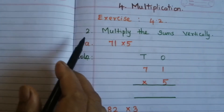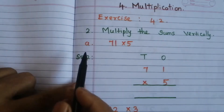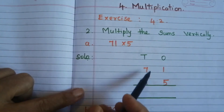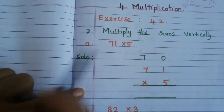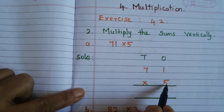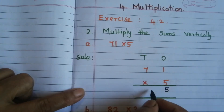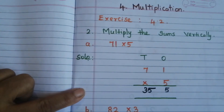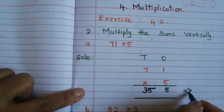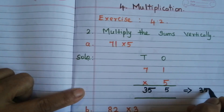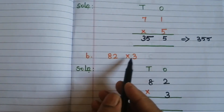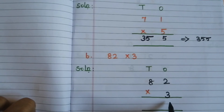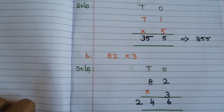Exercise 4.22 — Multiply the sums vertically. A: 71 × 5 — write the numbers vertically under ones and tens. Start from the ones place: 5 ones are 5, 5 sevens are 35. The answer is 355. B: 82 × 3 — 3 twos are 6, 8 threes are 24. Answer is 246.